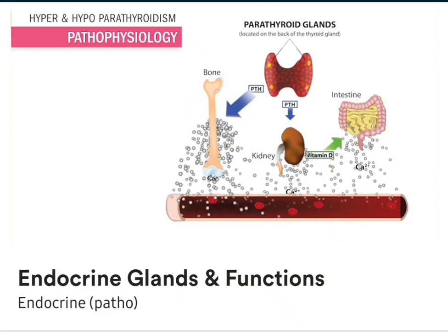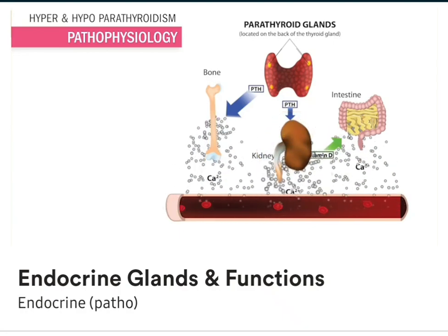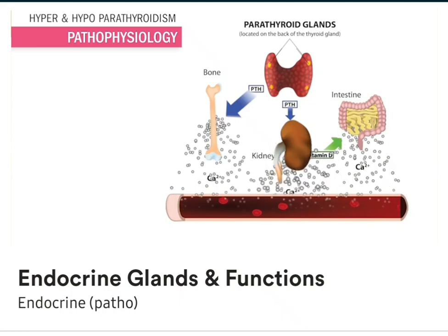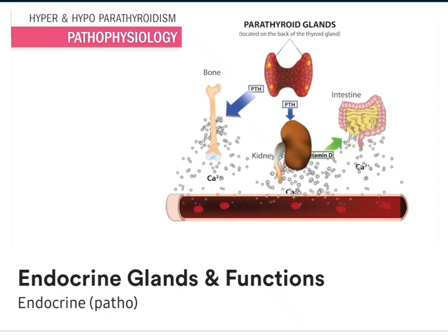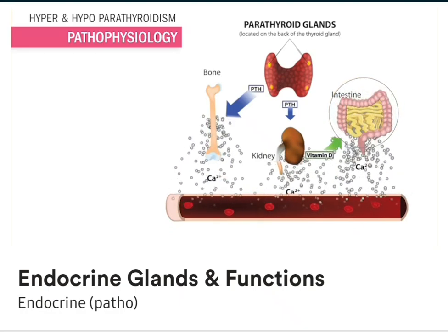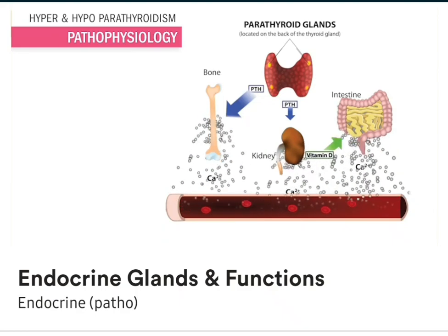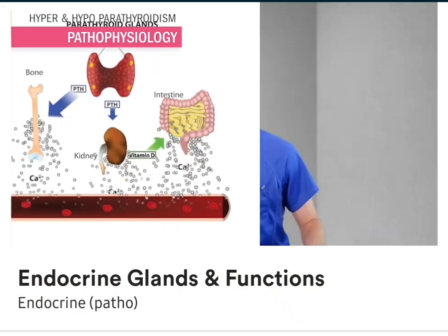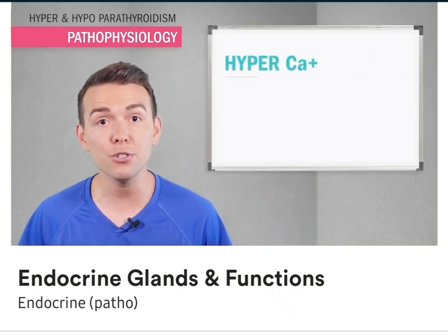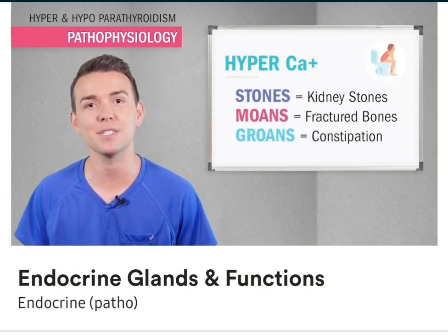The kidneys — the washing machines of the blood — have to filter out all that excess calcium from the body. But they get overloaded, and we get kidney stones, aka renal calculi. Our intestinal tract gets overloaded with calcium, causing rock-hard bowels — a common sign and symptom of hypercalcemia. The top three signs of hypercalcemia are usually stones for kidney stones, moans for fractured bones, and groans for constipation.